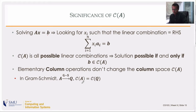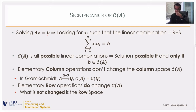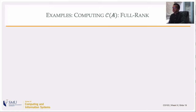Gram-Schmidt is basically a set of elementary column operations to get the orthonormal version of a matrix, so the column space of the original matrix and the column space of its orthonormal version are the same. However, elementary row operations do change the column space, because you're altering elements. What row operations preserve is the row space, since you're taking linear combinations of rows.